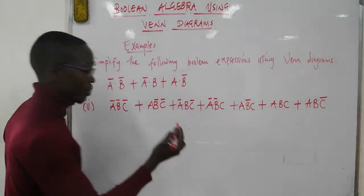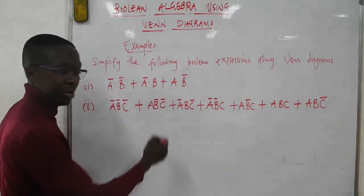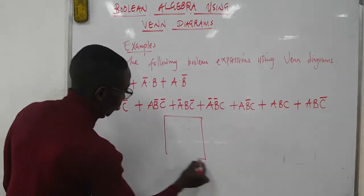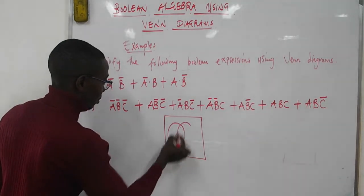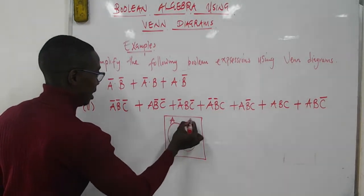For this example, it is a two-input problem because you have A and B appearing everywhere. So you draw the Venn diagram for two inputs. Now you have two sets, A and B.